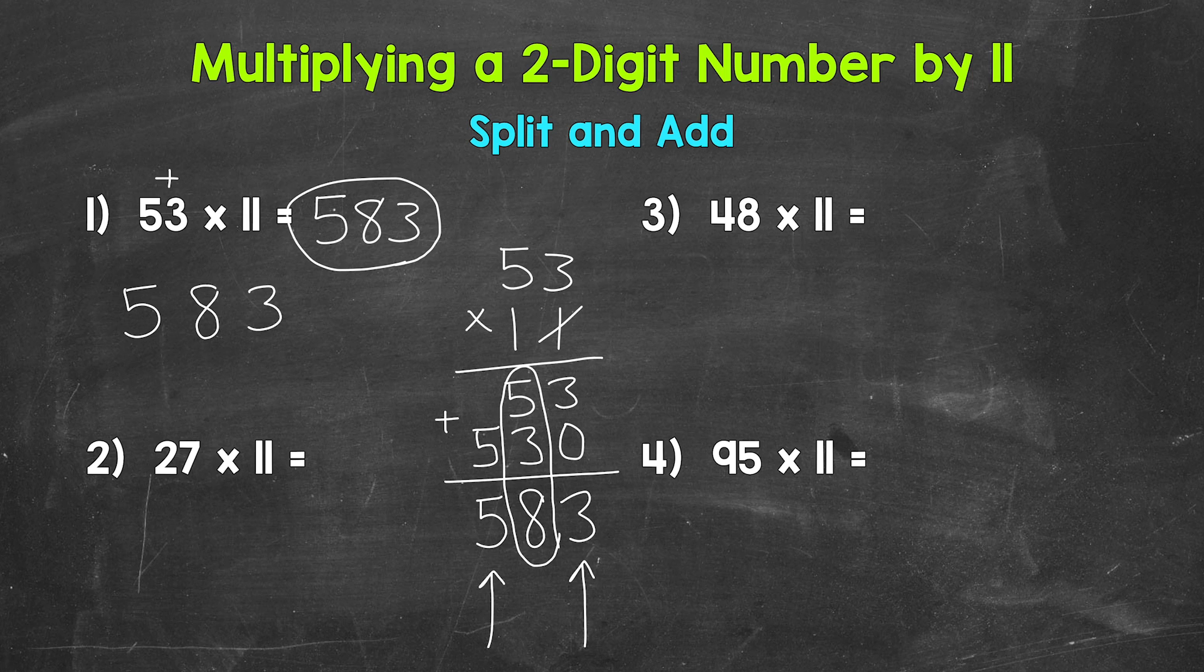Let's move on to number 2, where we have 27 times 11. So let's split the digits of 27. And then add. 2 plus 7 is 9. So split and add. 27 times 11 equals 297.